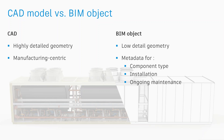CAD is manufacturing-centric and is not really meant for other phases like coordination or maintenance — especially if we're talking about only 2D drawings. On the other hand, BIM objects have rich data behind the 3D model that can be available for future maintenance. You can even add maintenance information, manuals, and things like that to a specific BIM object.